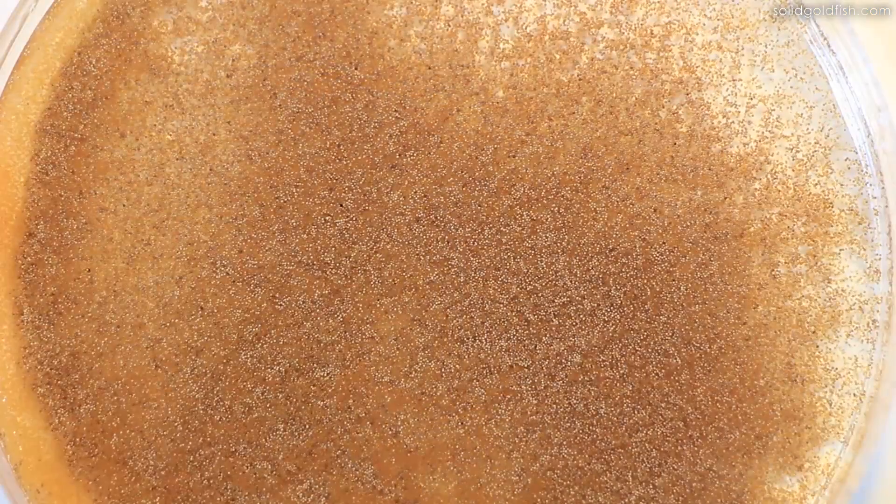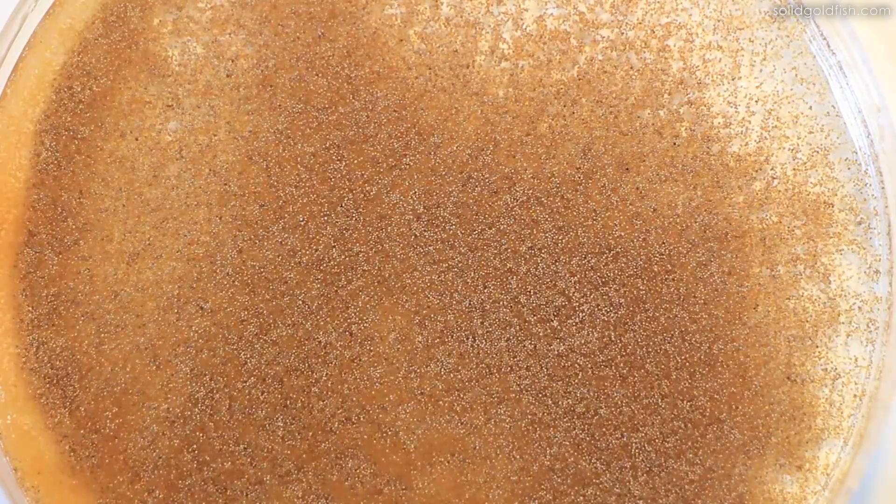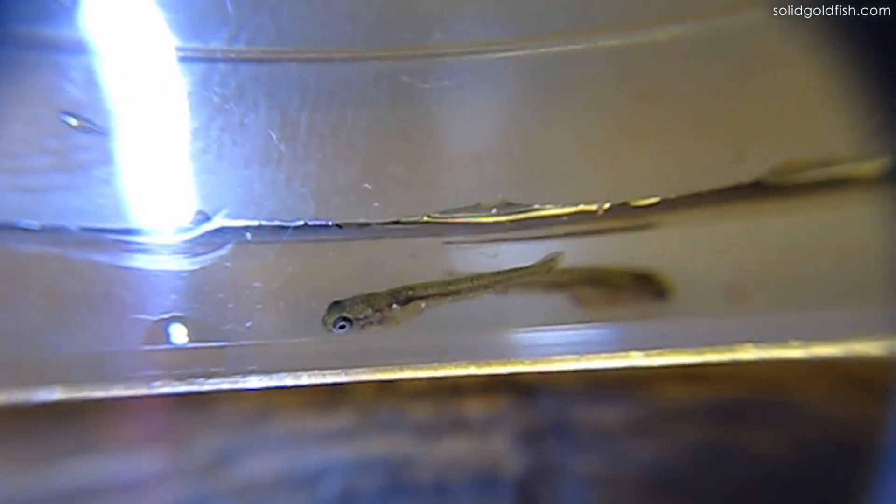Brine shrimp are good for fry to eat because they're high in protein, are easily digestible, and they can survive for hours in the fry tank, giving the fry a more continuous food source.